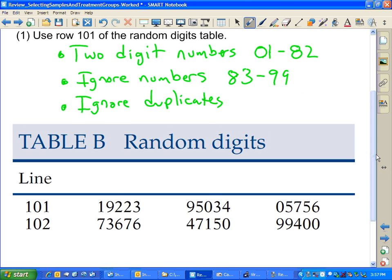We want two digit numbers, 01 to 82. This is the line number. These are not random digits. These are random digits, and these are broken into groups of two. The first groups of two, we're selecting five students.